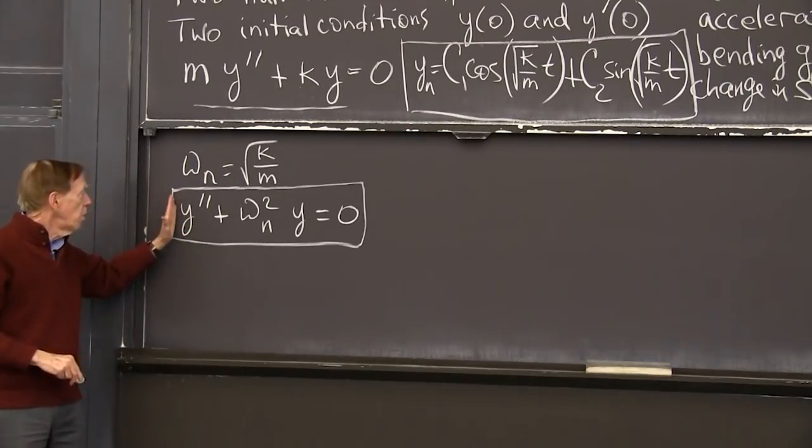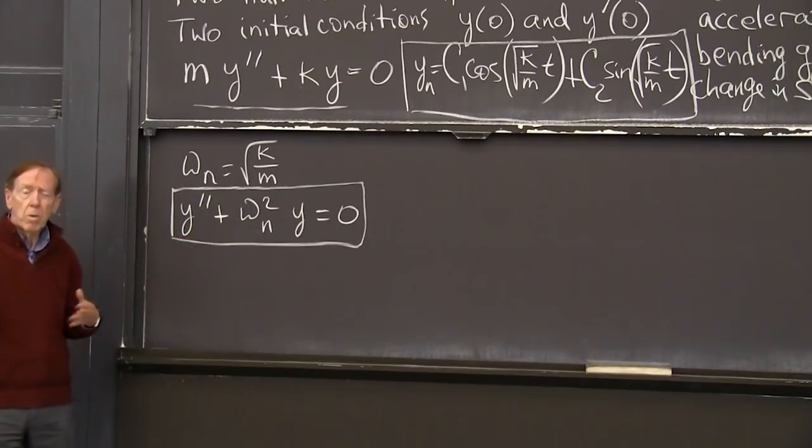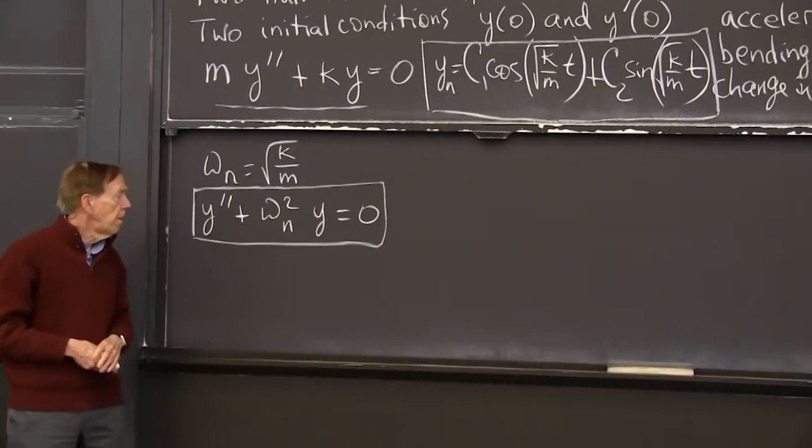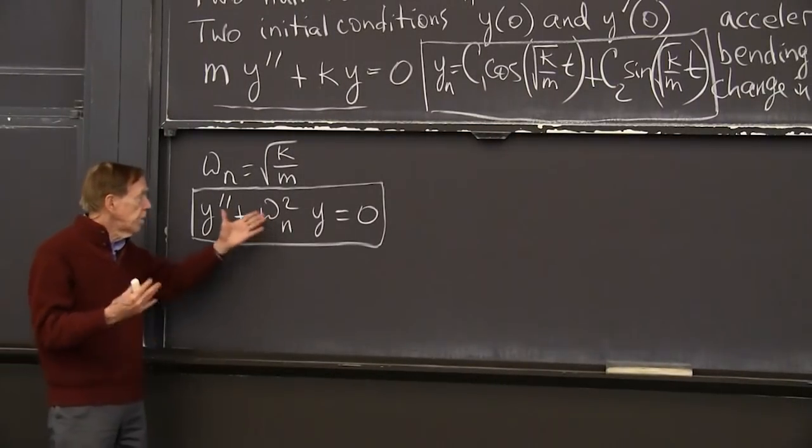because you couldn't be better than that. The constant a is 1, the constant b is 0, the constant c is a known omega_n squared, depending on the pendulum itself.